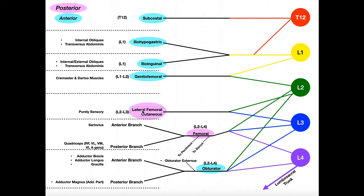Next is one that's purely sensory: the lateral femoral cutaneous nerve. The word 'cutaneous' tells us it's sensory — cutaneous nerves are sensory by definition, not mixed, not motor. It provides sensation on the lateral aspect of the thigh, relaying sensory information back to the CNS. Following the route back, it gets contributions from the L2 and L3 ventral rami, so the lateral femoral cutaneous nerve is L2 and L3.